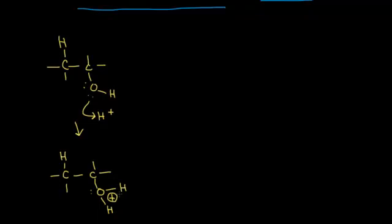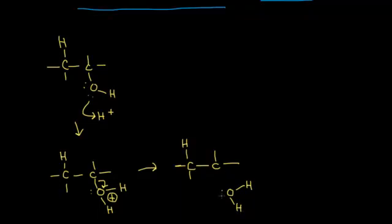Oxygen doesn't like to be positively charged—it's very electronegative—so it wants electrons. The best source is the bond between carbon and oxygen. In the next step, these two electrons in that bond kick off onto the oxygen atom. The result: we break the bond between carbon and oxygen, water separates, oxygen is now bonded to two hydrogens with two lone pairs of electrons. Water is now floating around as a product.